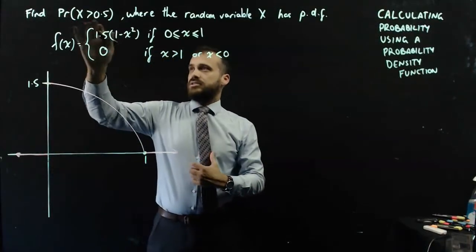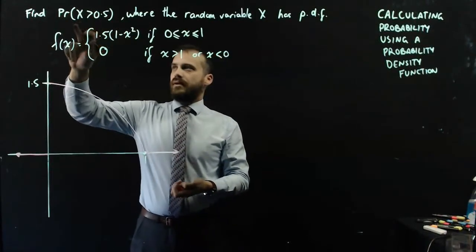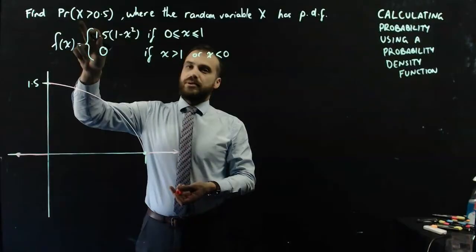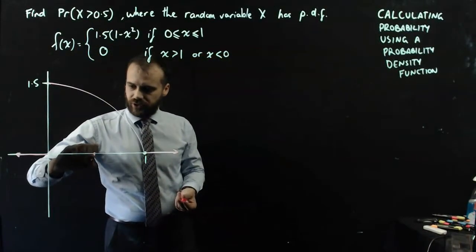So x is greater than 0.5. This might be like a math test. And so we're asking: find the probability that a random person got more than 0.5 on the test. So here's 0.5.